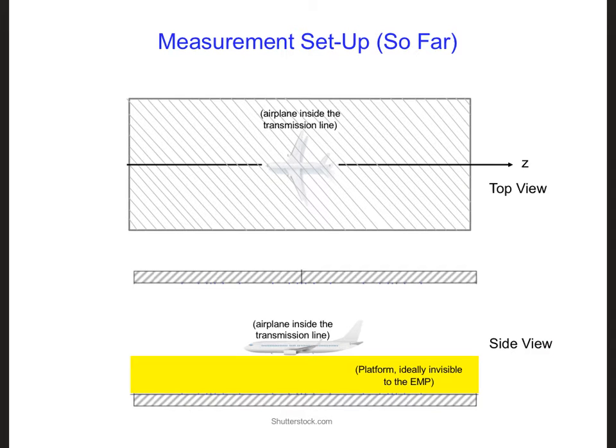Last time we determined that when an electromagnetic wave propagates through wood over the entire frequency range of the E1 component of an EMP, the displacement current will dominate over the conduction current.